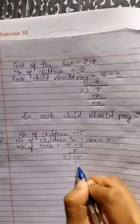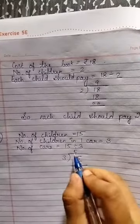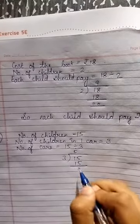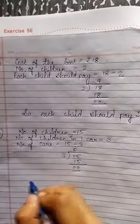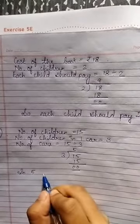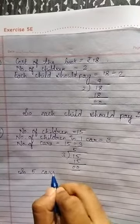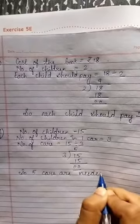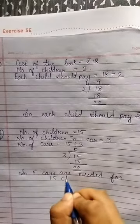3 fives are 15. In the table of 3, 15 comes 5 times. We will subtract: 5 minus 5 is 0, 1 minus 1 is 0. So, 5 cars are needed for 15 children.